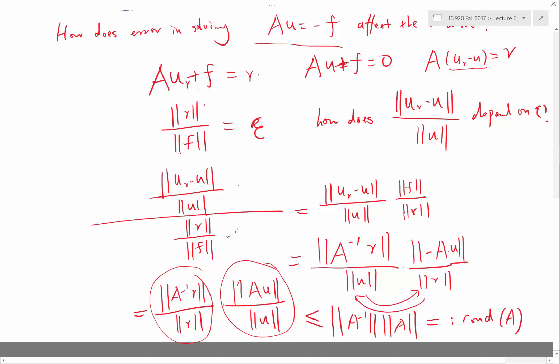The condition number is the matrix norm of A inverse times the matrix norm of A. It's a non-dimensional number. Even if the matrix A contains entries that has dimensions, the condition number is non-dimensional because it's the norm of A inverse times the norm of A.